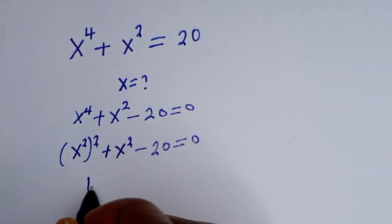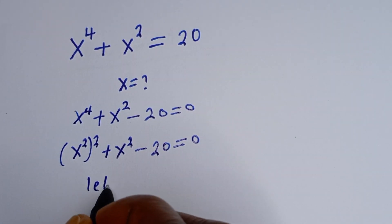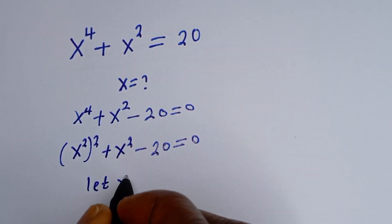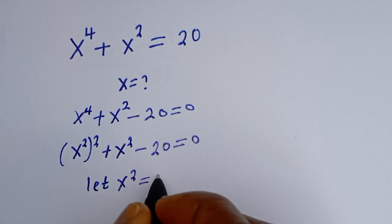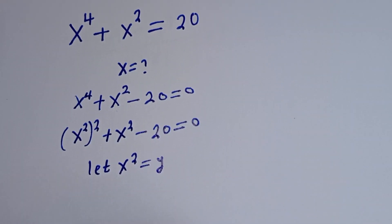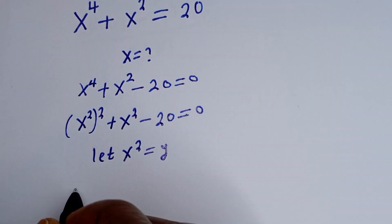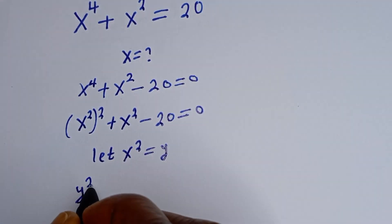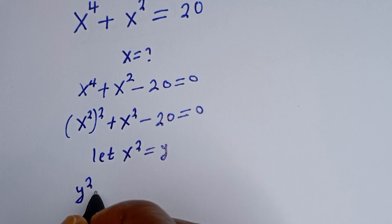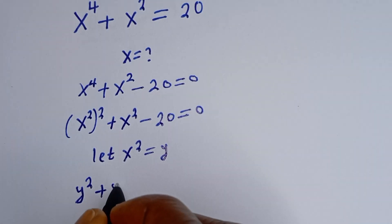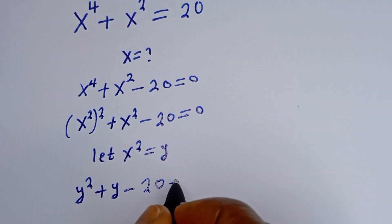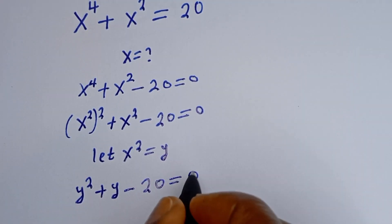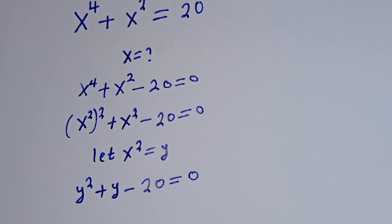Let s squared be equal to y. Then we have y squared plus y minus 20 is equal to 0.